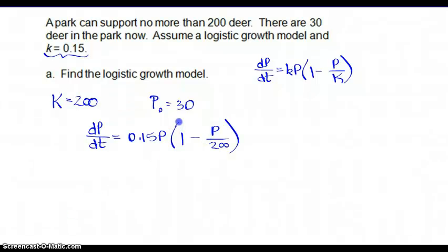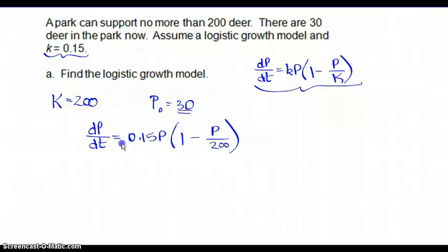You might notice we didn't use p-naught. Well, p-naught is not in this formula — the initial population does not have an effect on the rate of change of the population.